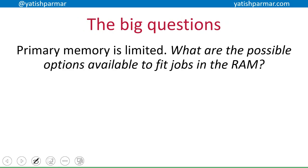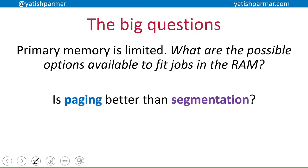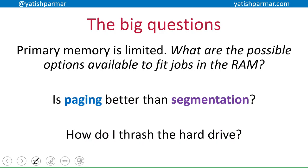To summarize, you should now know the three options for fitting jobs in RAM: waiting for space, moving processes to store jobs contiguously, and splitting jobs across wherever free space is available using paging or segmentation. You should have an idea of whether one is better than the other, and understand the relationship between virtual memory and disk thrashing.